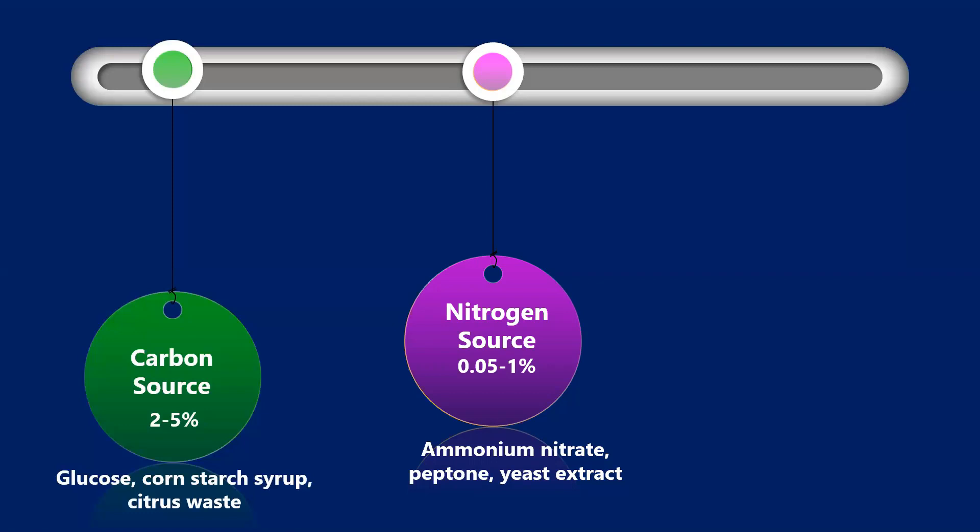Next we require an enhancer, that is citric acid. 0.09 to 0.18 percent is sufficient. What does citric acid do? It is basically a chelating agent. It prevents the heat precipitation of xanthan. Further you will see in the downstream that we do a heat precipitation step, so there we will have this utilization of citric acid.